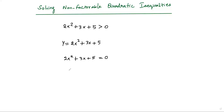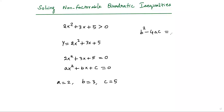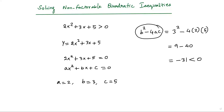We compare this quadratic equation to the standard form ax² + bx + c = 0. When we compare, we get a = 2, b = 3, and c = 5. To check whether we have a solution, let's find the value of the discriminant, which is b² - 4ac. So b is 3: 3² - 4(2)(5) = 9 - 40 = -31, which is less than 0. Since the discriminant is less than 0, this quadratic equation has no solution.